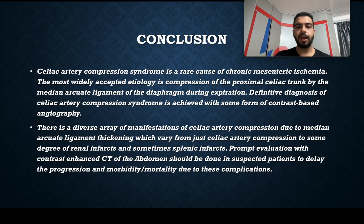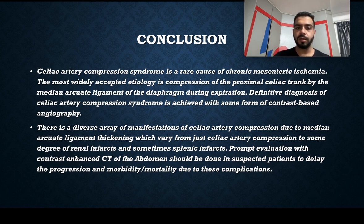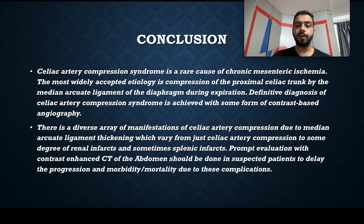In conclusion, celiac artery compression syndrome is a rare cause of chronic mesenteric ischemia. The most widely accepted etiology is thickening of the median arcuate ligament, which causes compression during expiration. Definitive diagnosis is achieved with contrast-based angiography, and there is a diverse array of manifestations ranging from asymptomatic celiac artery compression to splenic and/or renal infarcts. Prompt examination of these patients with CCT abdomen is necessary.